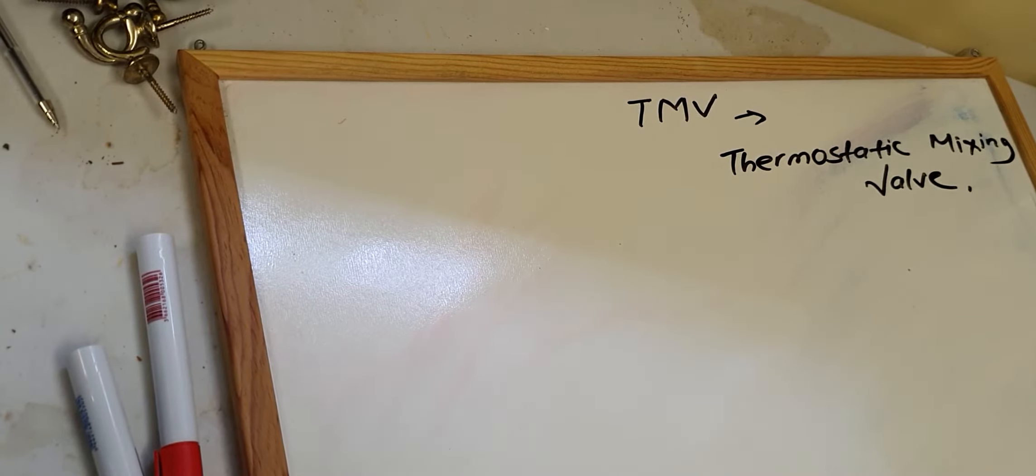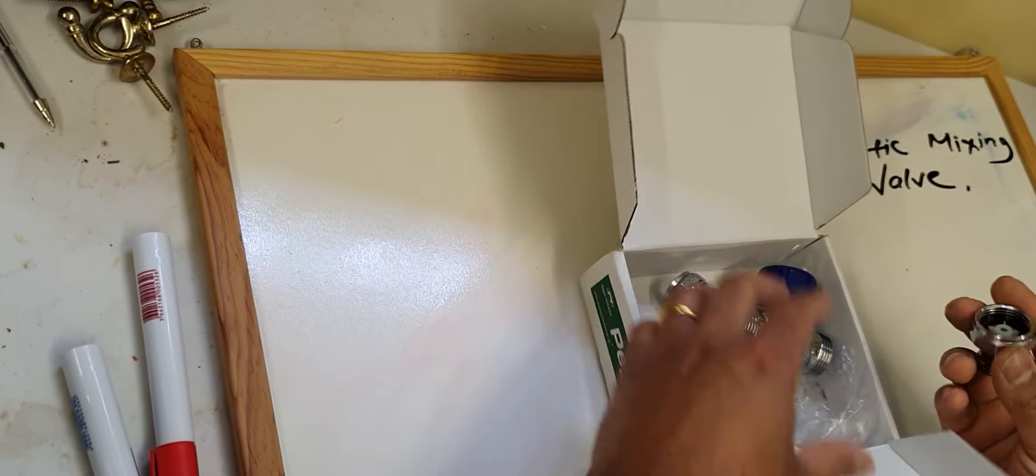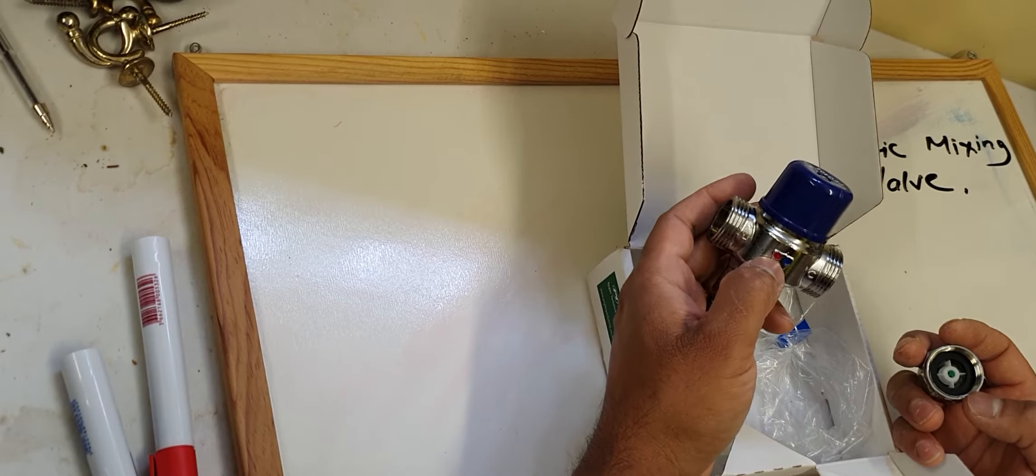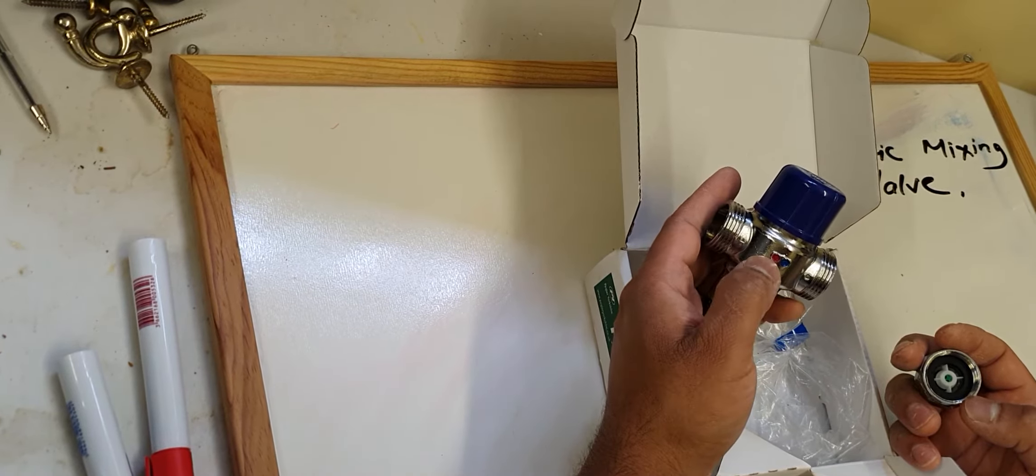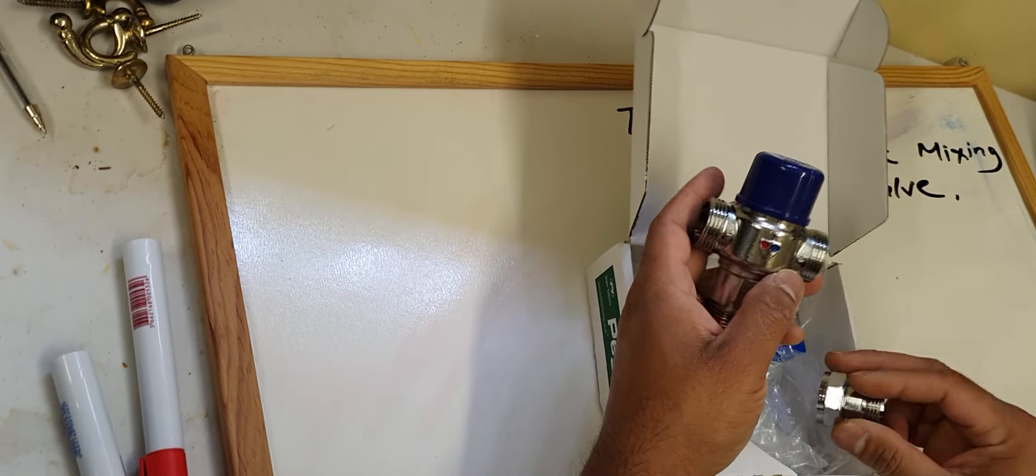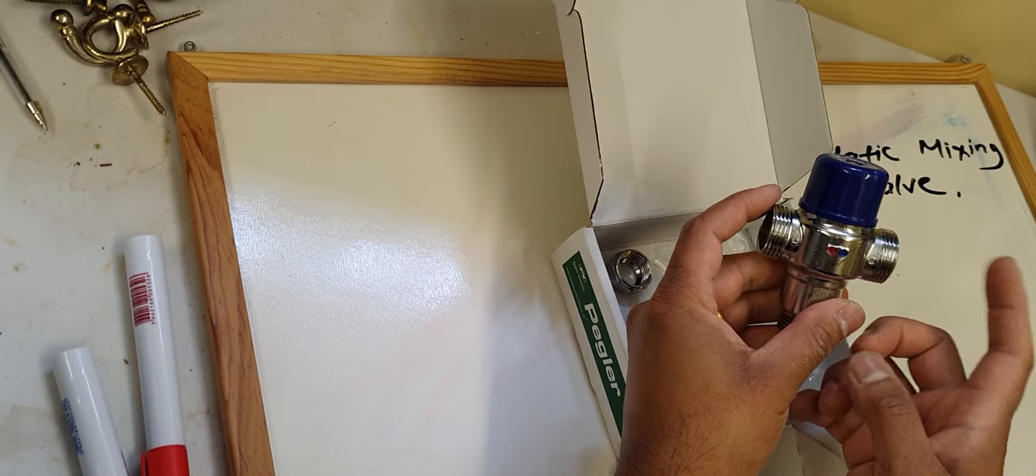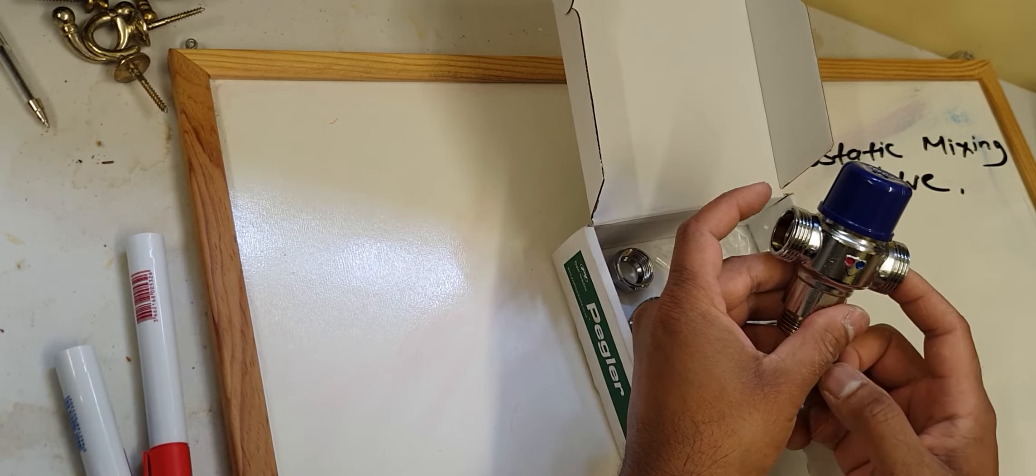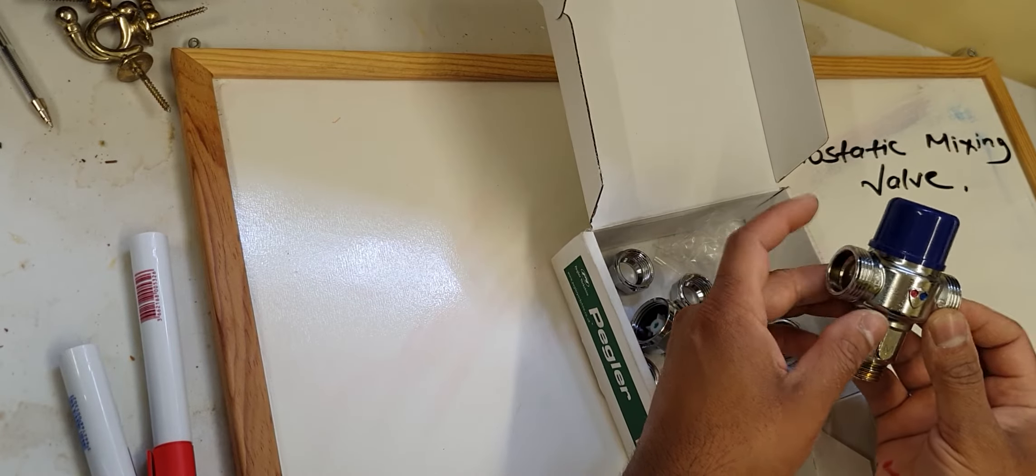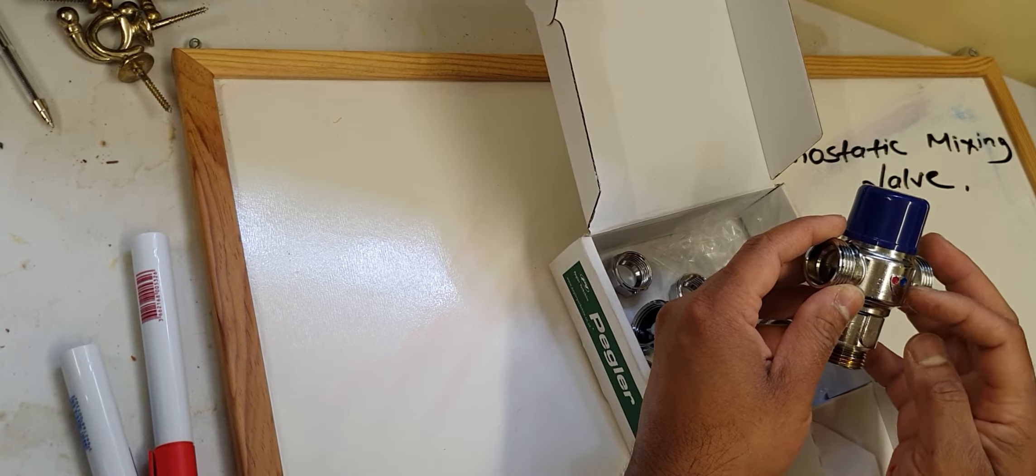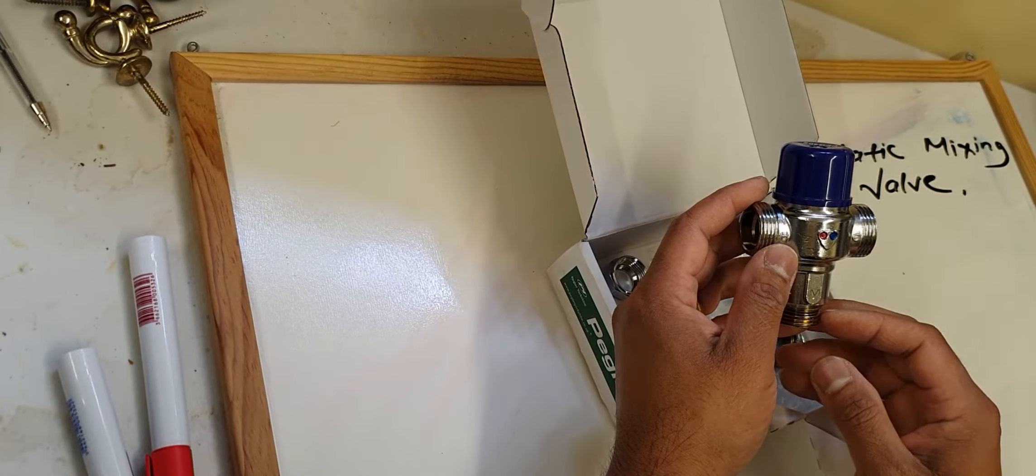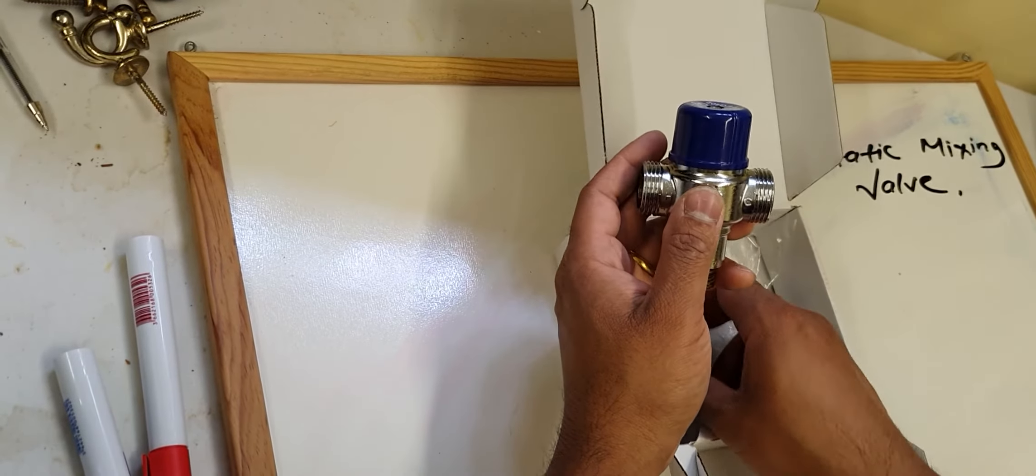Here you can see the red and blue dots. Red means hot, blue means cold. The cold water gets into the TMV from this side and the hot water from this side, and it blends together and gives you the temperature of around 40 degrees Celsius to the hot water tap.